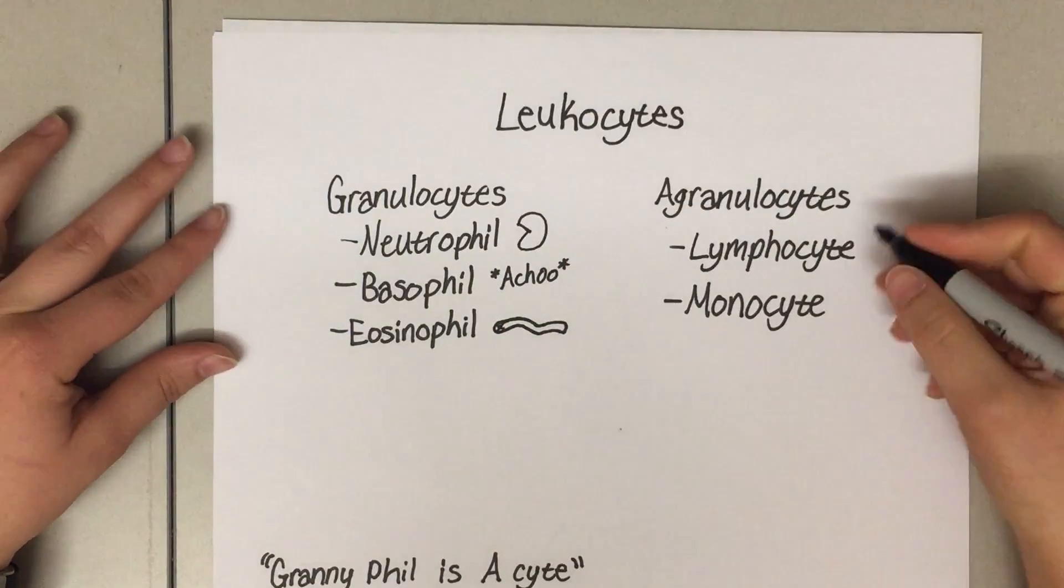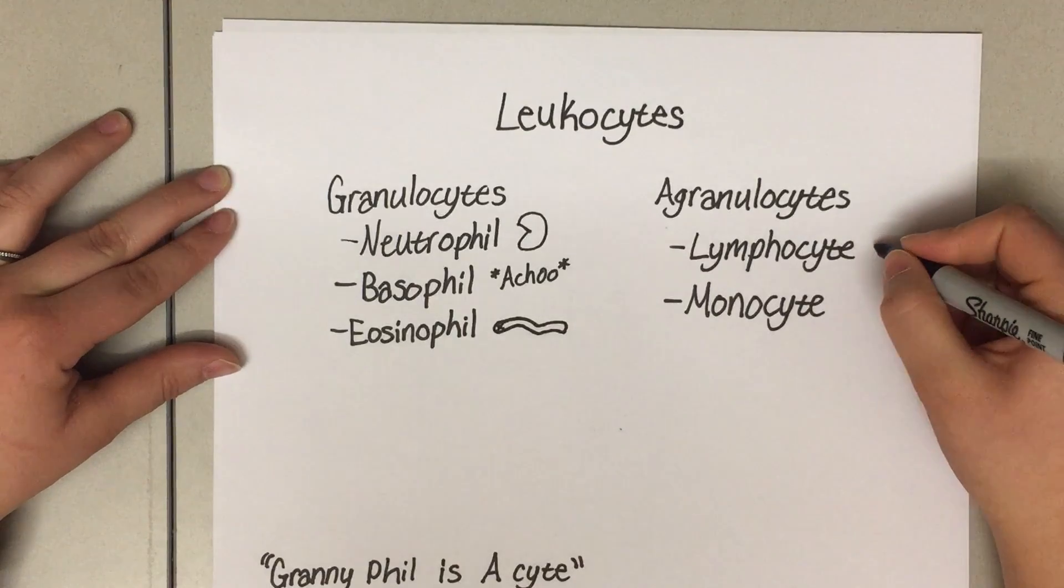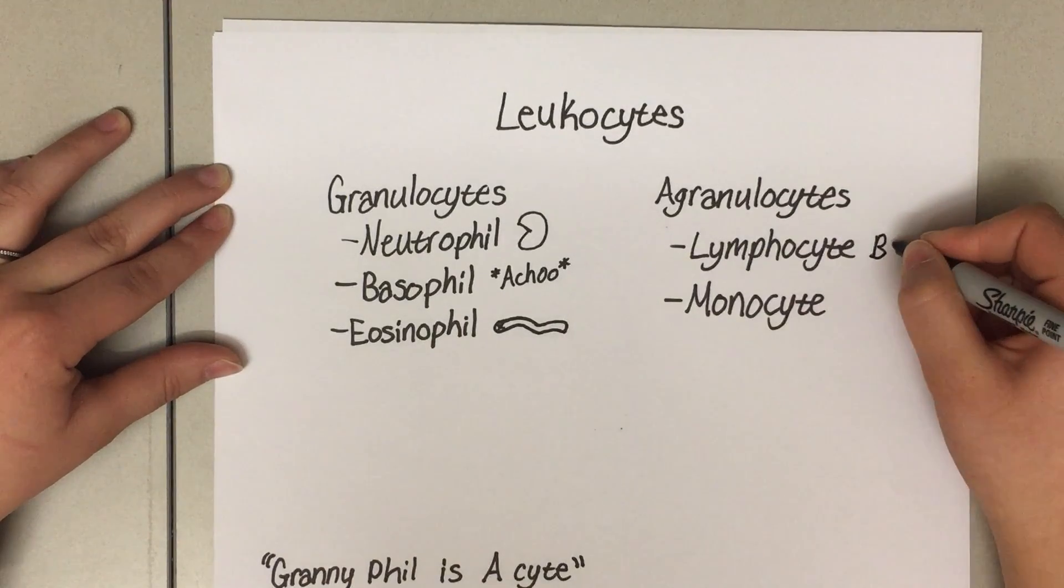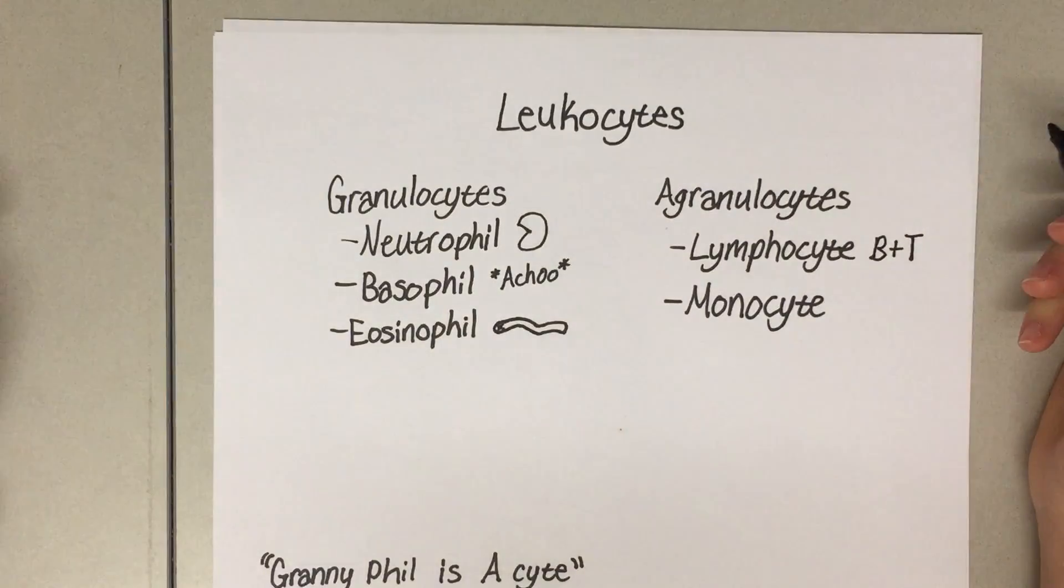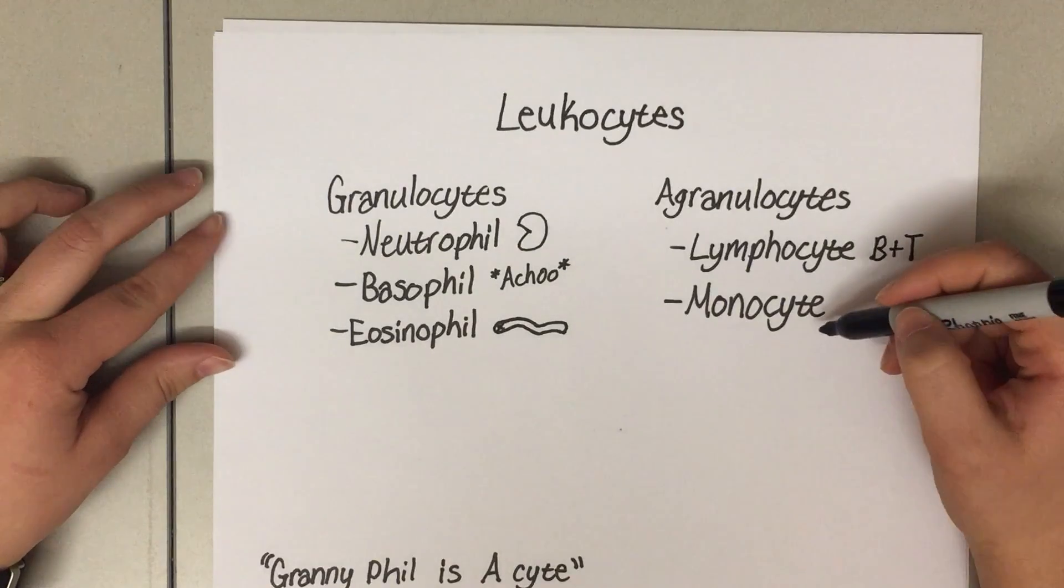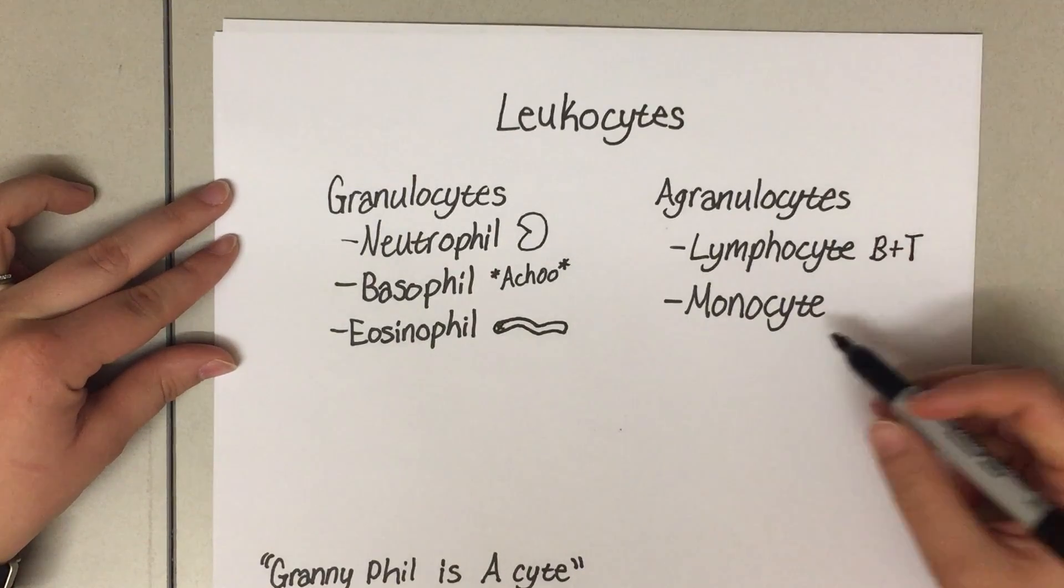With the agranulocytes, the first one is the lymphocyte. Lymphocytes - there's B and T cells - work together to help with both your humoral immunity and your cell-mediated immune responses. And then there's the monocyte. Monocytes can become macrophages when they exit the bloodstream.